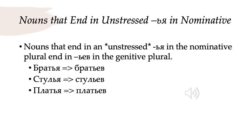The next class of nouns has a мягкий знак + я in the nominative plural, but it is stem-stressed — so we have this unstressed мягкий знак + я in the nominative plural. These nouns are going to take мягкий знак + -ев in the genitive plural. So братья, nominative plural, becomes братьев; стулья, chairs, becomes стульев; платья, dresses, becomes платьев.